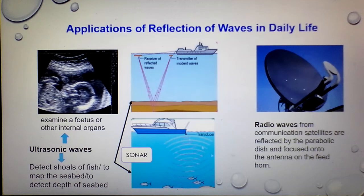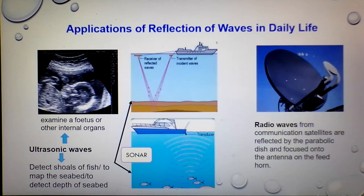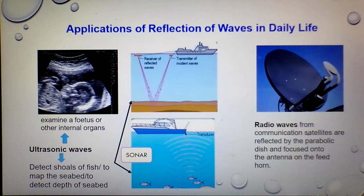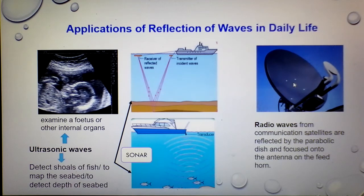Another application: radio waves from communication satellites are reflected by a parabolic dish and focused onto the antenna on the feed horn — like the Astro dish on your rooftop. The dish has a concave shape with a large diameter. The receiver is placed at the focus point of the concave dish. When signals arrive in a parallel direction, they converge to the focus point of the antenna, giving the receiver maximum signal — resulting in clear sound and a clear image when watching TV.